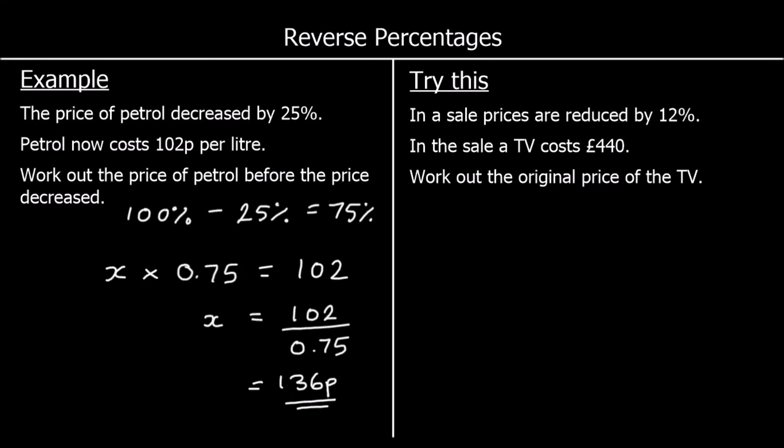In a sale, prices are reduced by 12%. So if we had 100%, and we took off 12%, that means we've got 88%. So as a multiplier, that's 0.88. So the original times 0.88. 88% of the original is 440 pounds. The TV now costs 440 pounds. So to work out the original price, I divide both sides by 0.88.